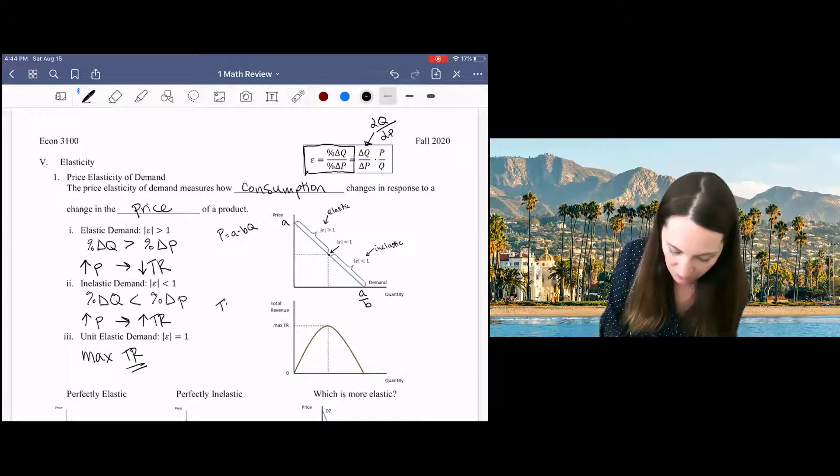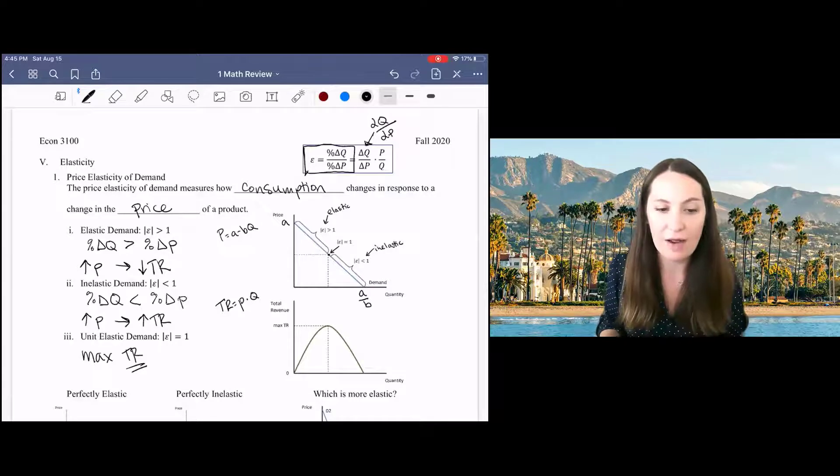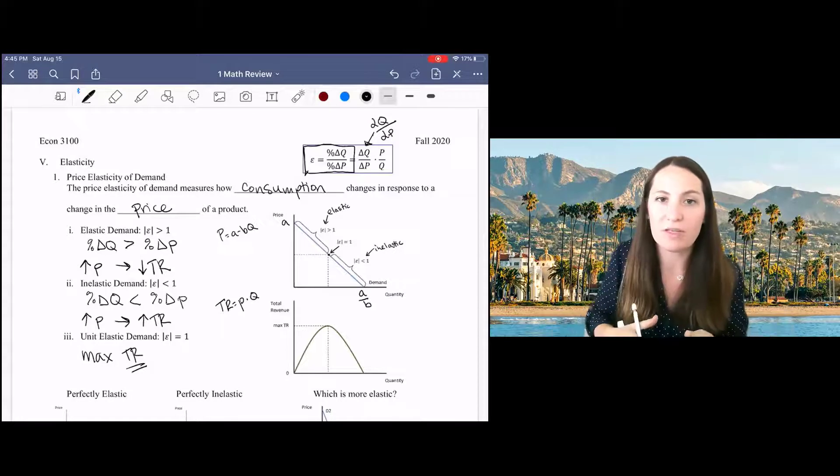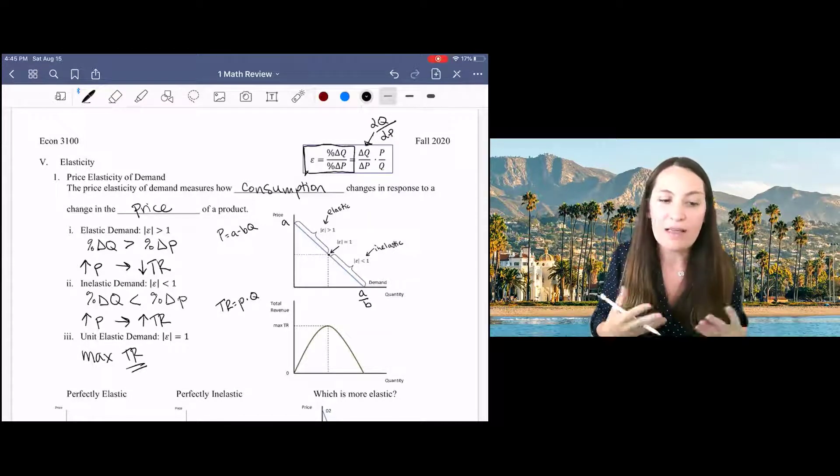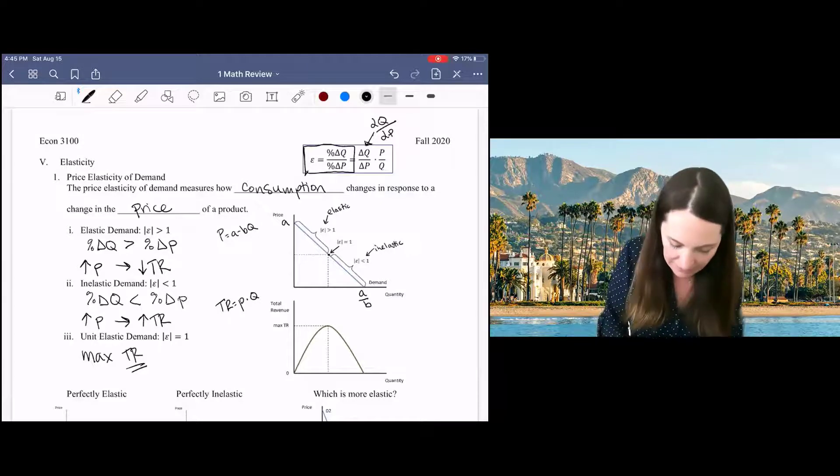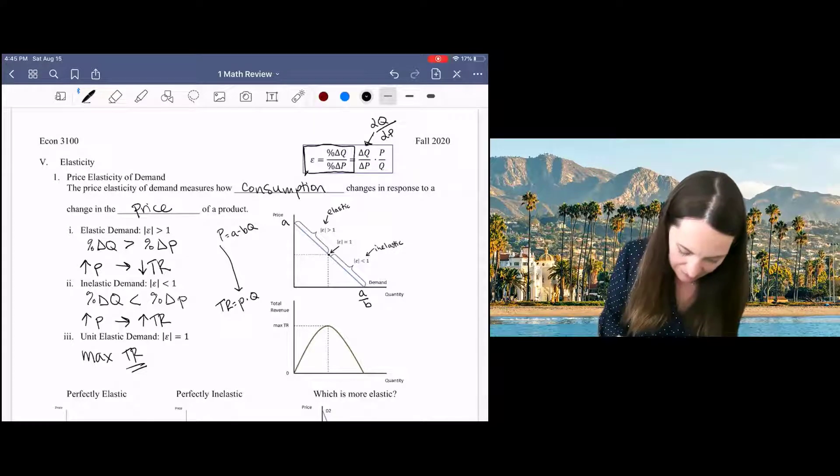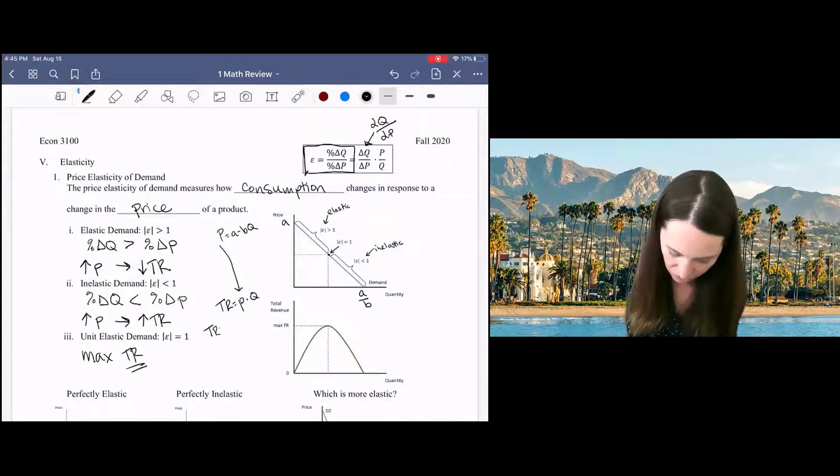So remember, total revenue is equal to price times quantity. But of course, price and quantity are related through the demand curve. So really, in order to understand total revenue, we've got to combine it with what we know about demand. And if I plug that in, I can now write total revenue just as a function of quantity.